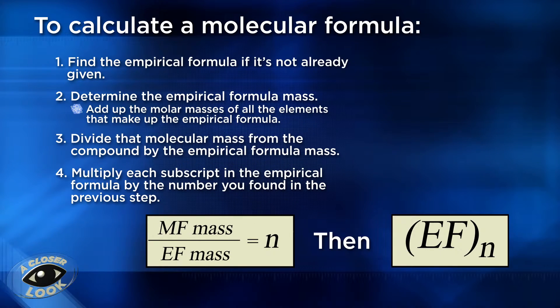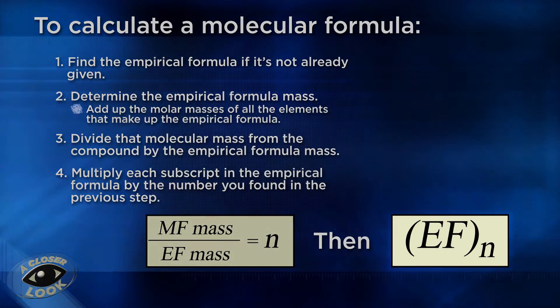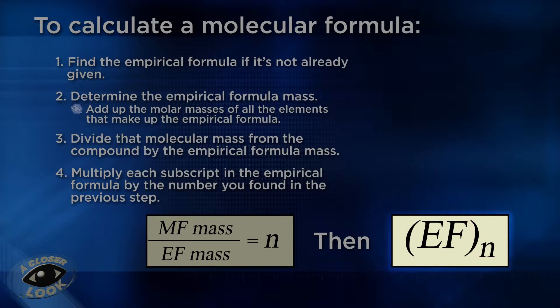And here are a couple of equations to illustrate that process. This first box says to take the molar mass and divide it by the empirical formula mass to get some number, an integer, n, if you will. Then distribute that integer to all the subscripts in the empirical formula.